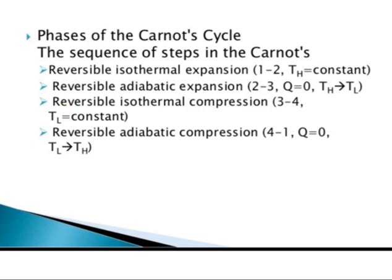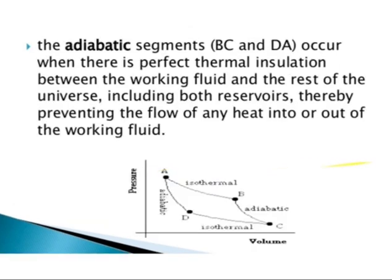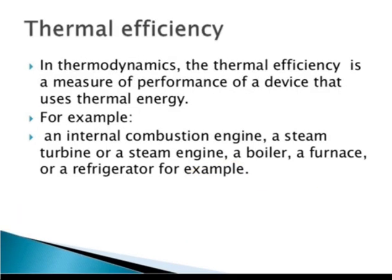The third step is reversible isothermal compression from C to D, where temperature is constant at T-cold. The fourth step is reversible adiabatic compression from D to A, where Q equals zero and temperature changes from the lower temperature back to the higher temperature TH.